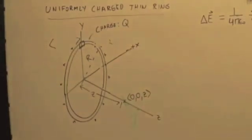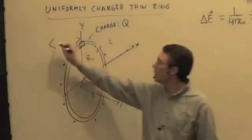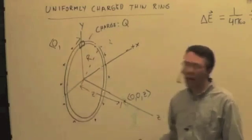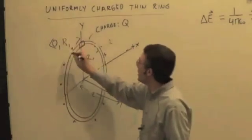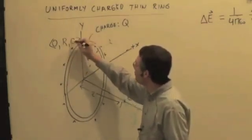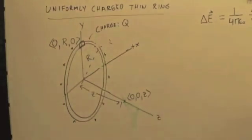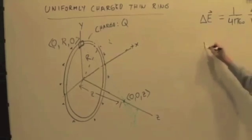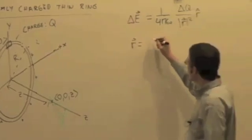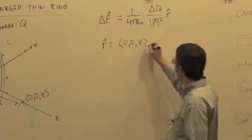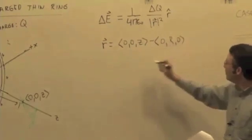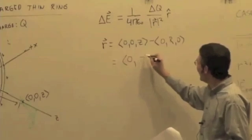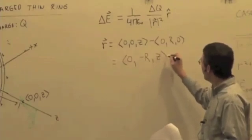What is the position, the vector position of a piece at the very top? That would be x equal to 0, y equal to capital R, the radius, and z equal to 0. And then our observation location is 0, 0, z. So little r is going to be 0, 0, z minus 0, R, 0, or 0, negative R, z.